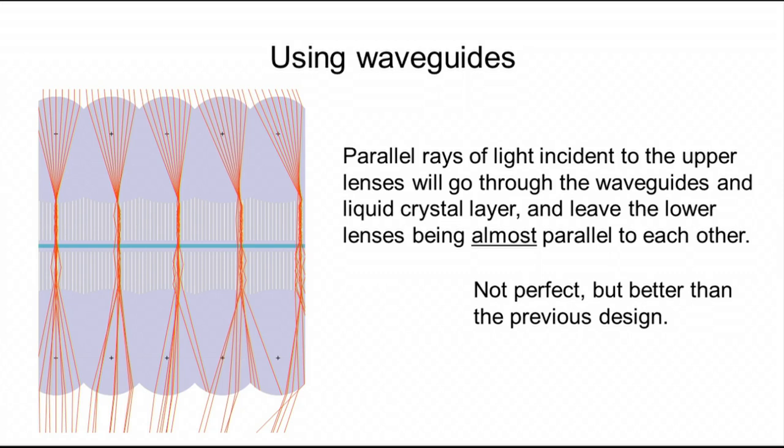In summary, parallel rays of light will come here and go through the waveguides and leave the lenses. In many cases, parallel rays of light will go parallel at the bottom. It seems that most of them are being parallel to each other. This is not perfect, but better than the previous design, I think.